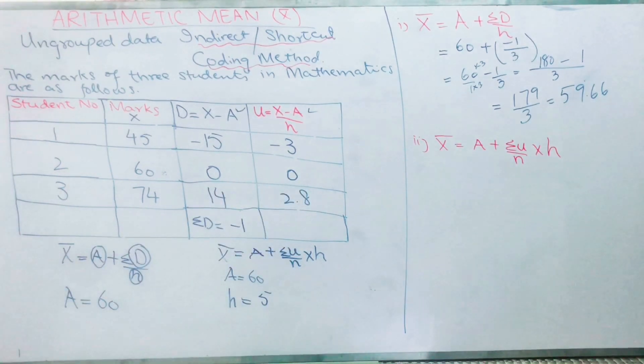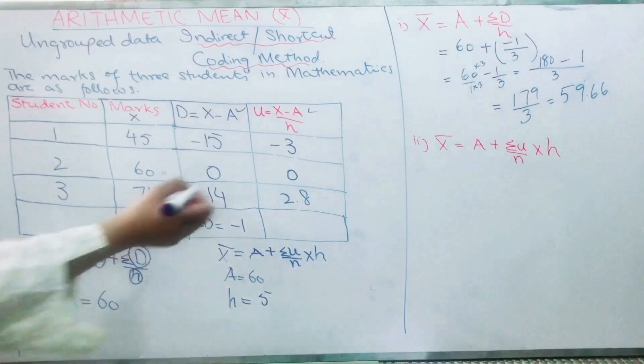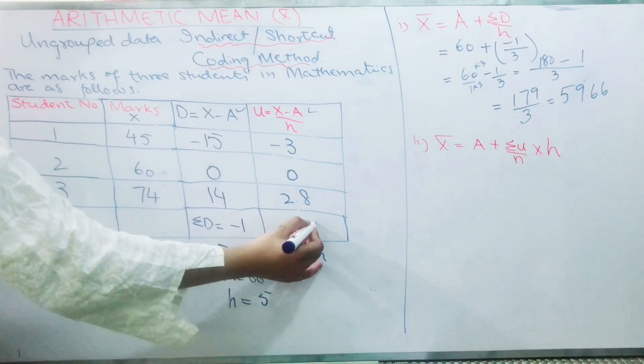When you add those values, you get minus 0.2.